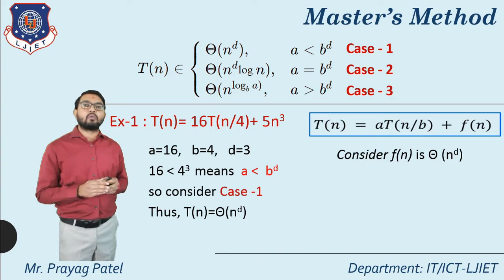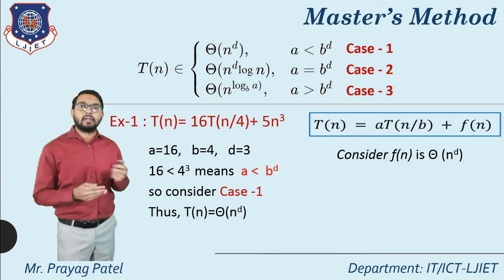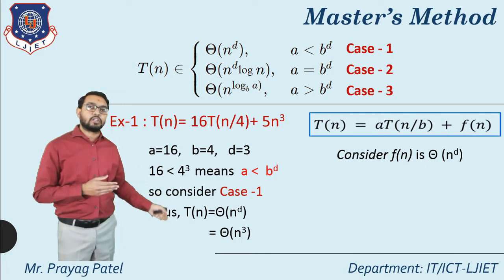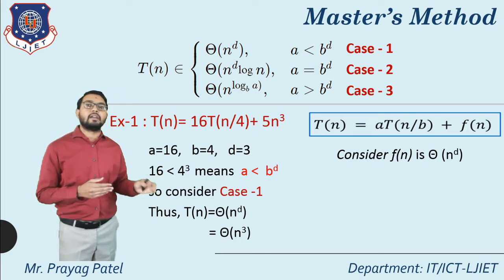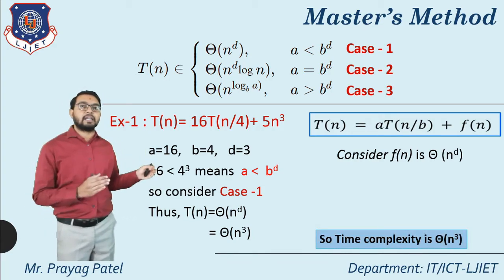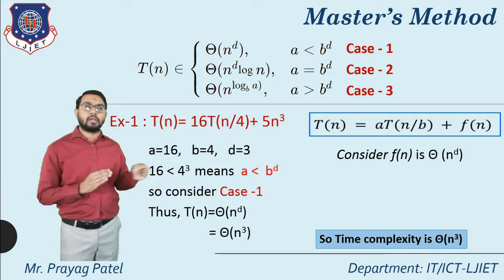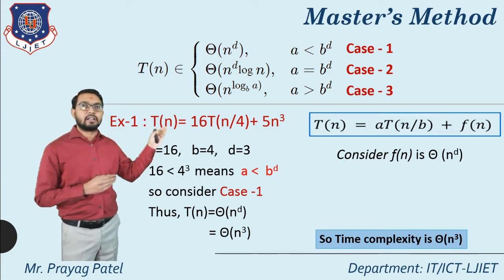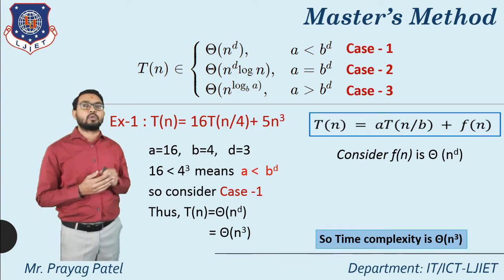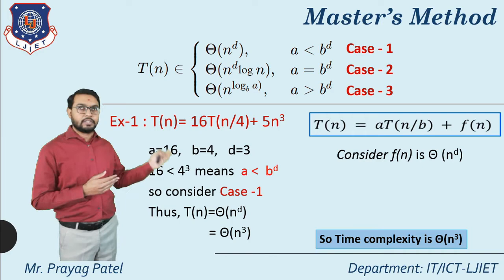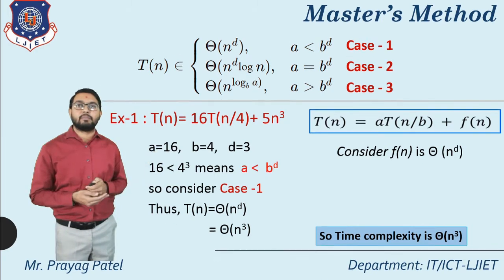According to case 1, T(n) = Θ(n^d). Putting d = 3, our answer is Θ(n³). So the complexity for the recurrence T(n) = 16T(n/4) + 5n³ is Θ(n³). This is the solution of our first example.